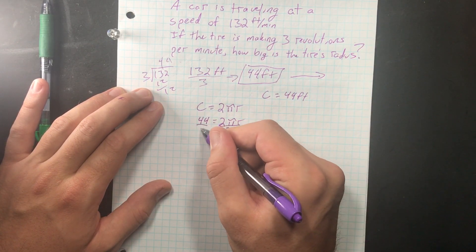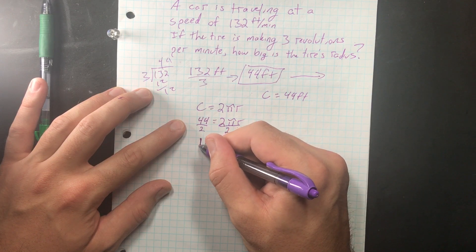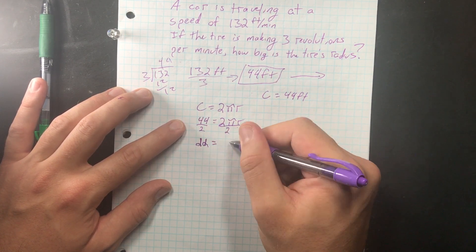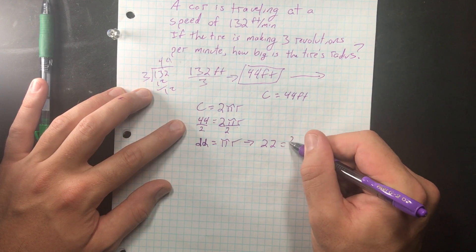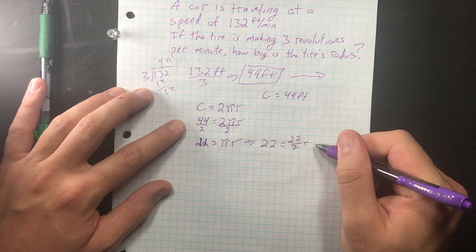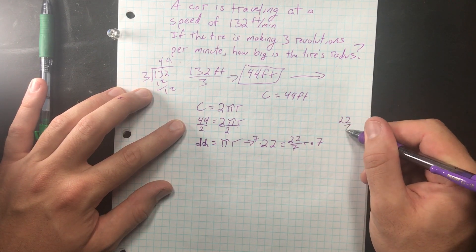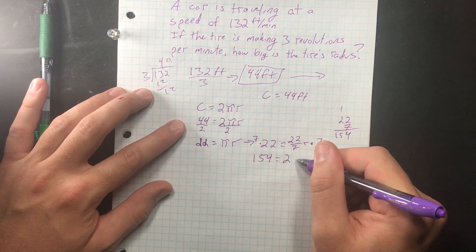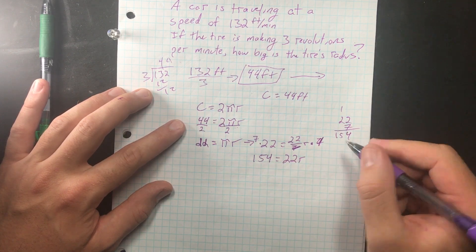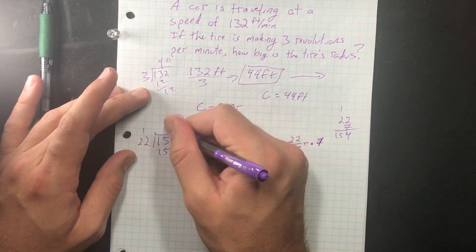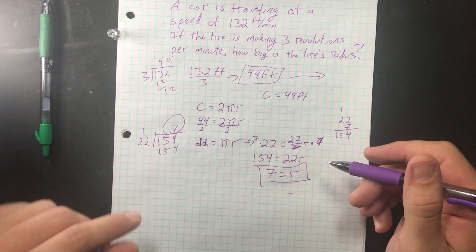So I'm going to divide both sides by 2. So I get 22 equals π times the radius. Now we know that π is that value of 22 over 7r. So what we can do is multiply both sides by 7. And I don't know what 22 times 7 is. 154 equals 22r because this 7 and this 7 cancel out. So now we need to find how many times 22 goes into 154. So our r is 7. That means that our radius is seven feet long.